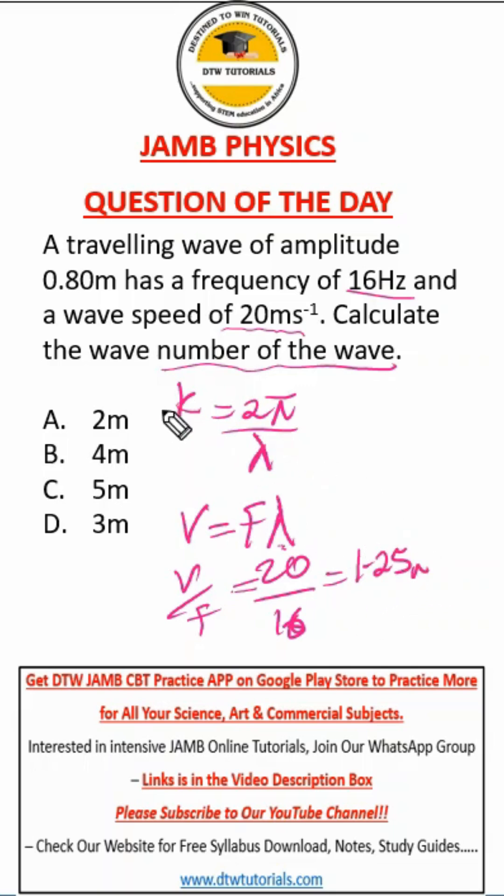Then from here, we can now find our wave number k. So we have 2π, and what is π? Always use π in your exam as 3.14. We divide by wavelength, which we found as 1.25. When you're punching your JAMB on-screen calculator,